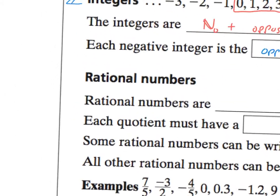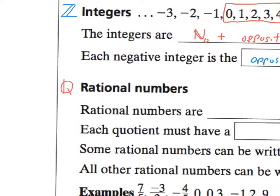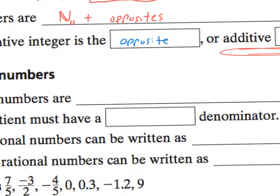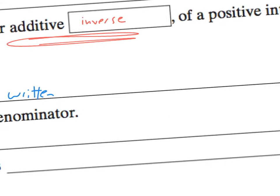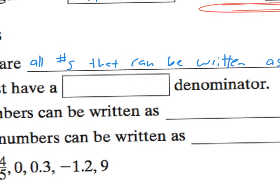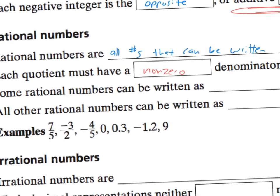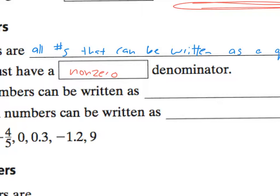Now, continuing on, the rational numbers, and the symbol for rational numbers is a fancy Q. Are all numbers that can be written as a quotient. All numbers that can be written as a quotient of integers. So what do we mean by that? Well, each quotient must have a non-zero denominator.